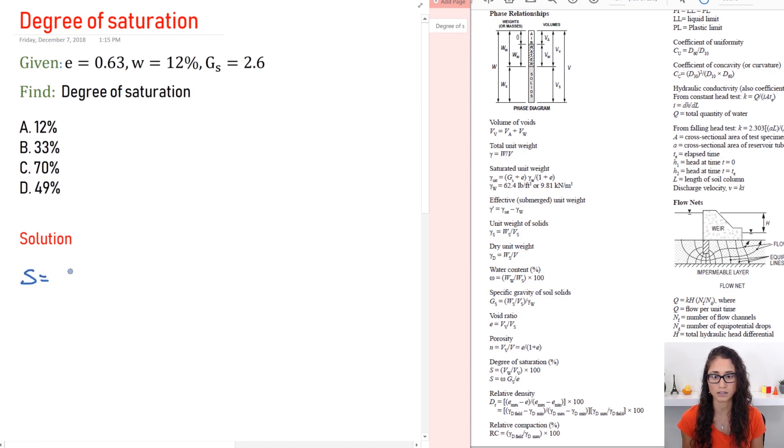So S is equal to the water content times gs divided by the void ratio. Now for the water content you can divide this by 100% and then you can just multiply it by 100 at the end because the degree of saturation is in percentage, or you could just use it as 12%.